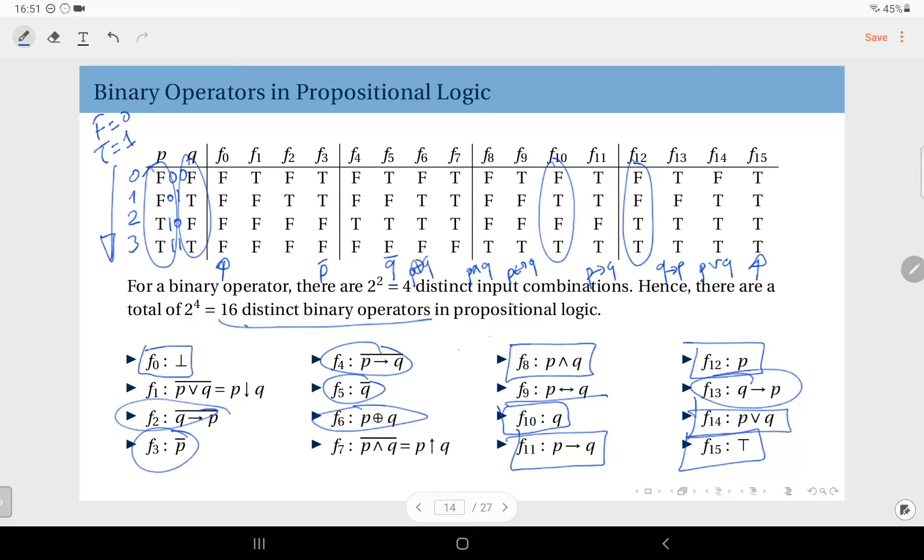There are only two that we didn't touch up to this point. And they are the negations of AND and OR. The negation of OR, the negation of P OR Q, we call NOR. So this here is P NOR Q. And this one similarly is the NAND operator, the negation of P and Q.